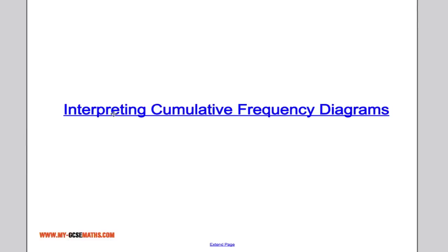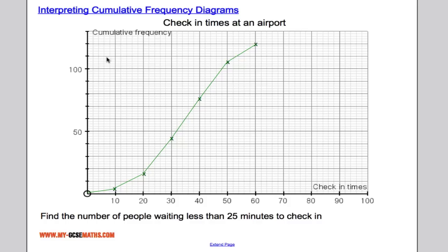Hi there. In this video we're going to take a look at how to interpret cumulative frequency diagrams. So here we have a cumulative frequency diagram from a previous video which was the check-in times at an airport, and I'm asked to work out the number of people that are waiting less than 25 minutes to check in.